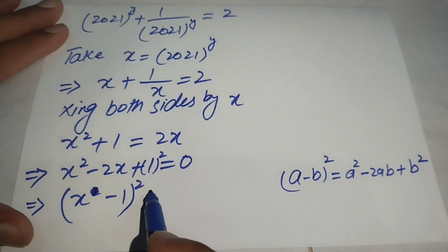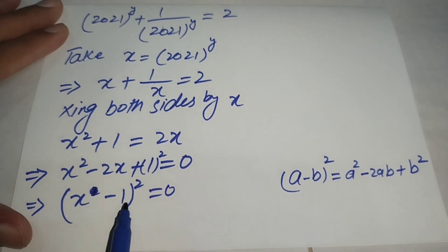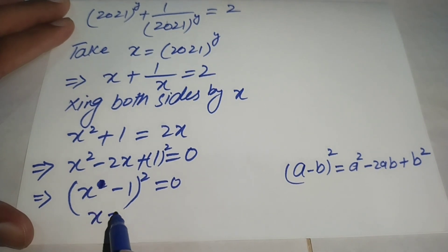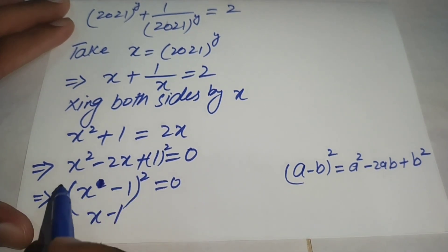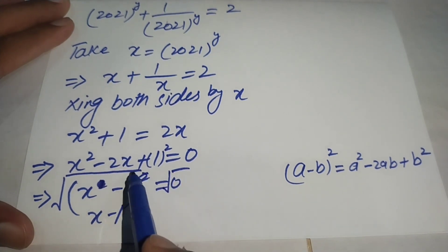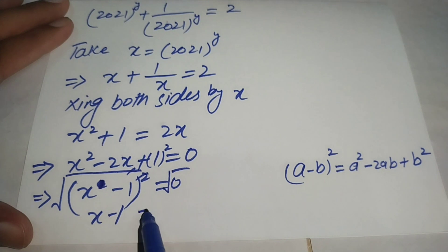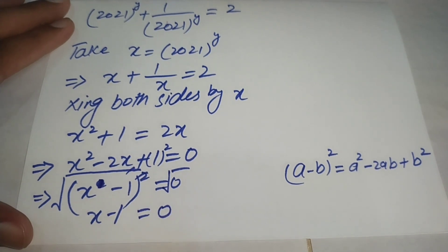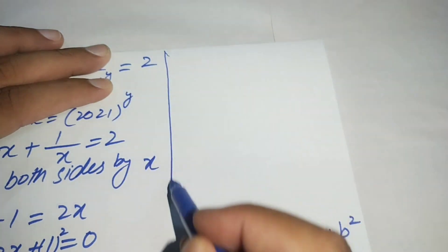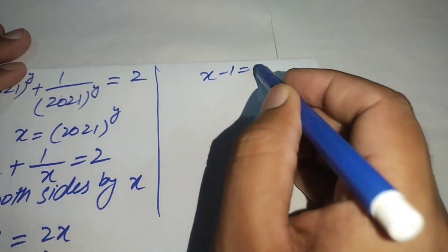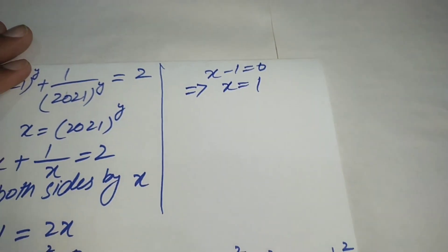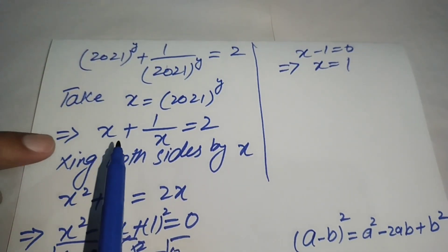Taking the square root on both sides, the square cancels with the square root, giving us x - 1 = 0. Therefore x = 1.